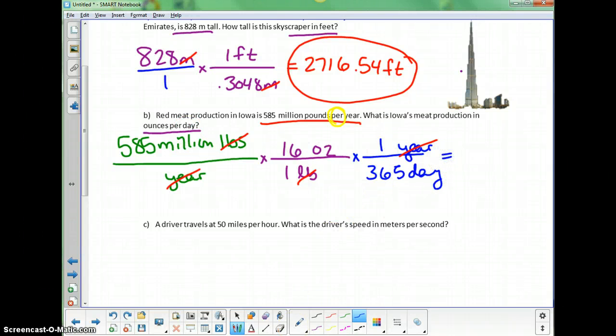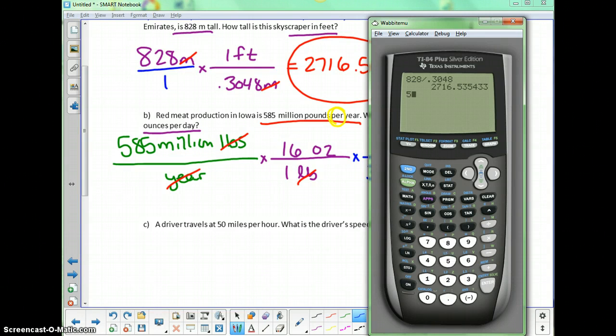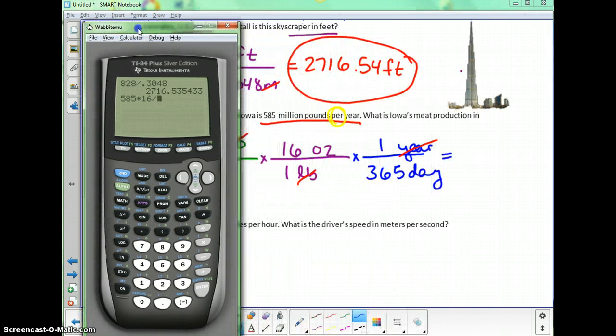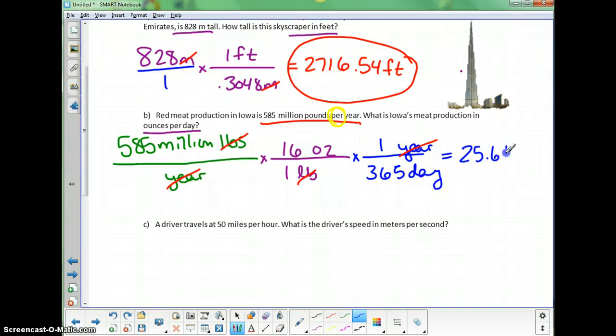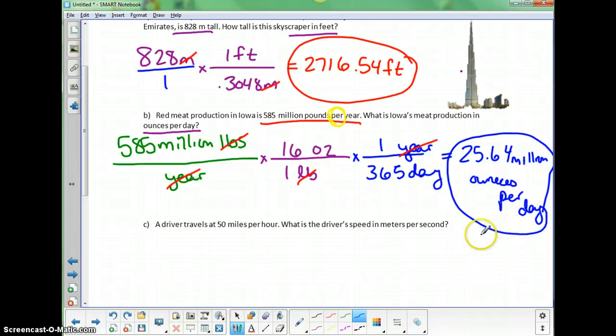Let's grab the calculator. 585 times 16, since both those numbers are in the numerator, divided by 365, since that number is in the denominator. So my answer is 25.64 million ounces per day. That's how much red meat is produced in Iowa.